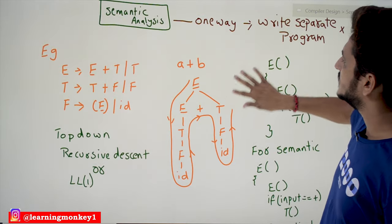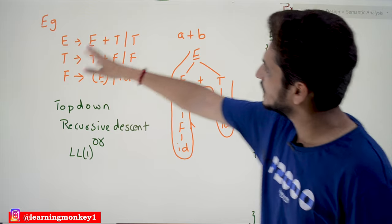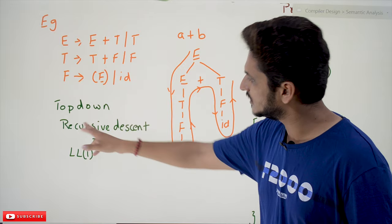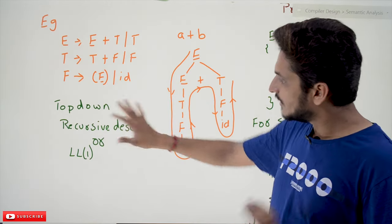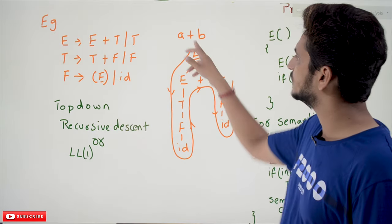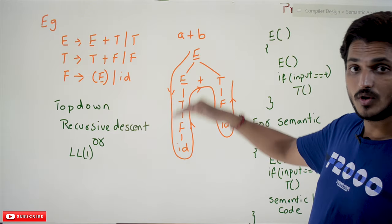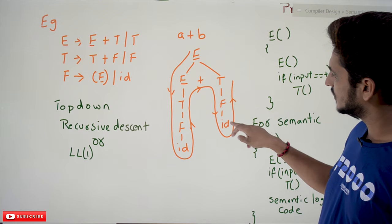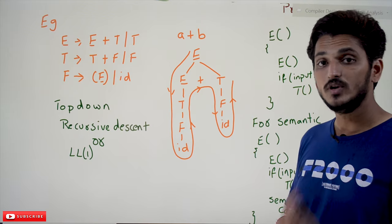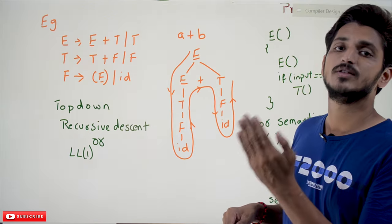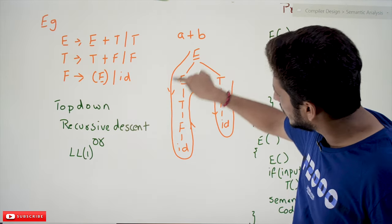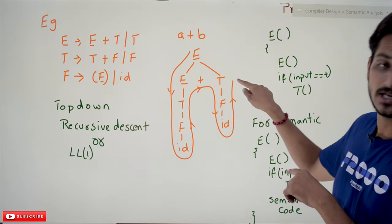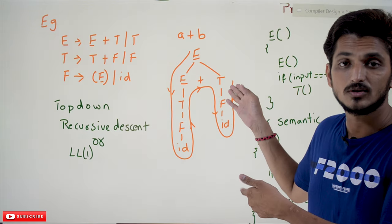Let's take an example using the basic expression grammar from our previous classes: E → E + T. If you are following a top-down approach — either recursive descent or LL(1) — for the expression a + b, E is evaluated top-down: E → E + T, T → F, F is id, then it checks for plus and expands T again for id. This gives us the leftmost derivation tree in the top-down approach.